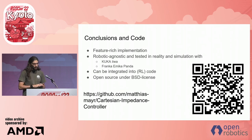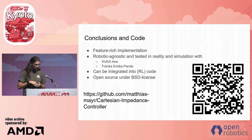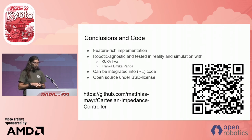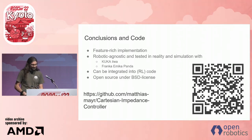To conclude, we have a feature-rich implementation of a Cartesian impedance controller. It's robot agnostic. We have tested it in reality and simulation with a KUKA IWA and a Franka Emika Panda. It can be easily integrated into other code, and it's open source under a BSD license. Thank you very much.